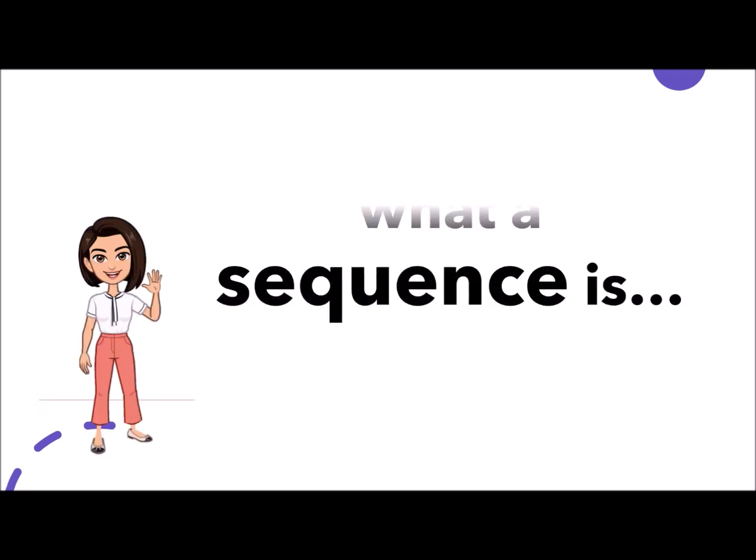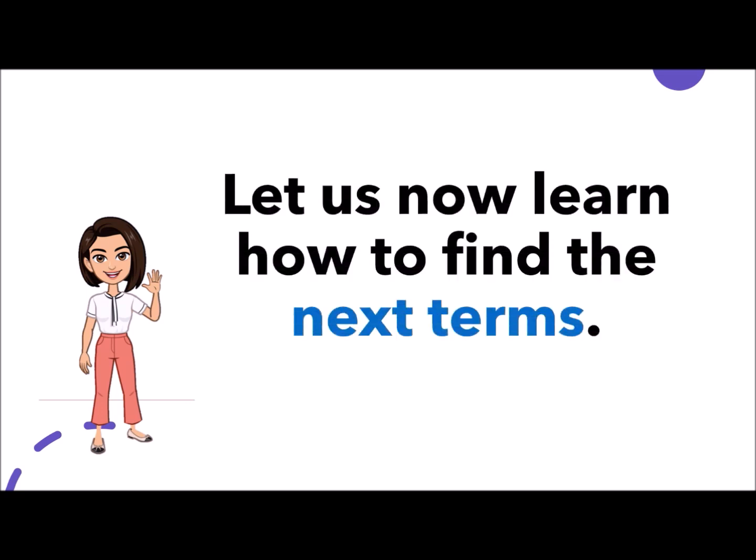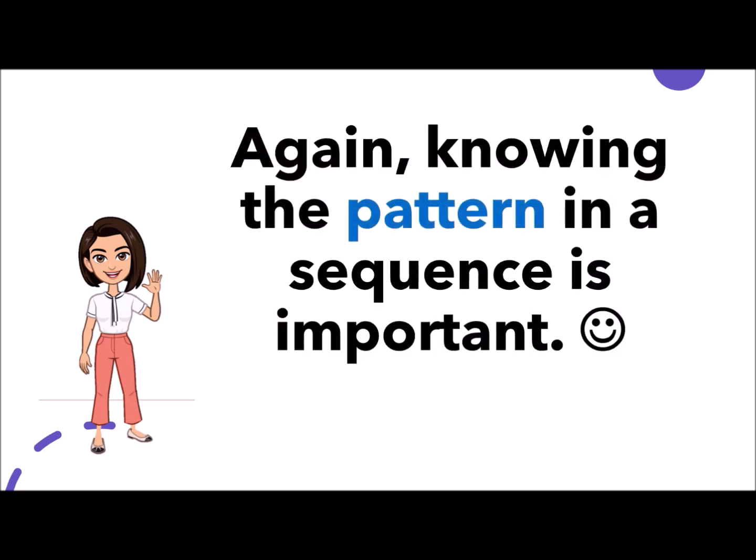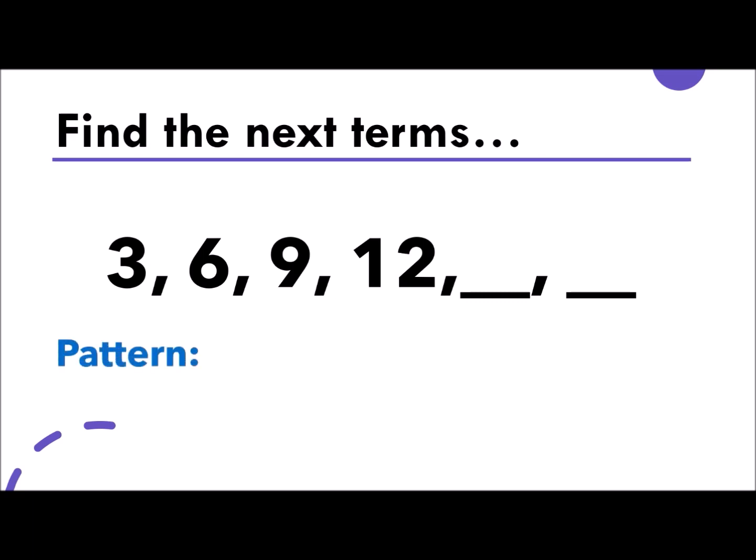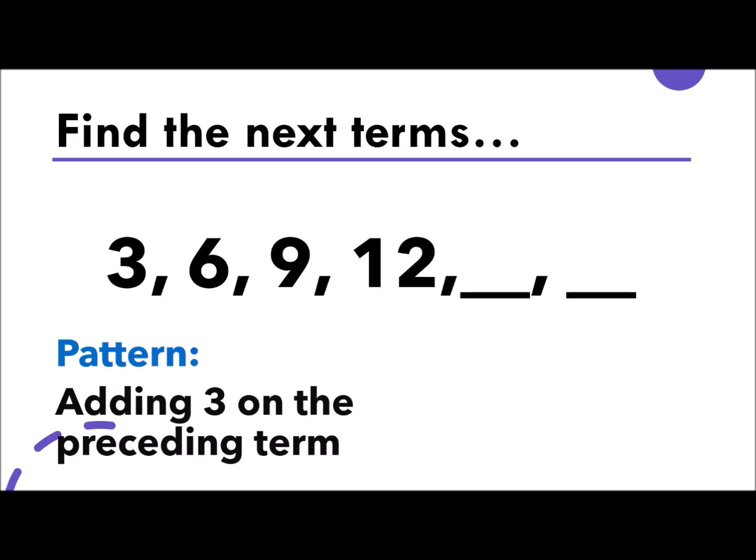After knowing what a sequence is, let us now learn how to find the next terms. Again, knowing the pattern in a sequence is important. In finding the next terms, 3, 6, 9, 12, we have two missing numbers. We need to find the pattern, like what we're talking about. We continuously add 3 on the preceding term.